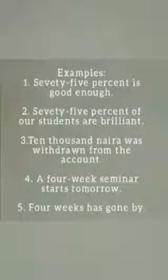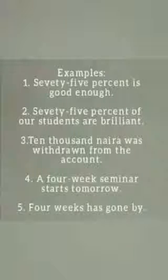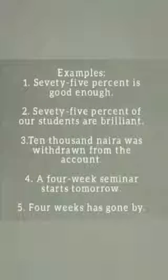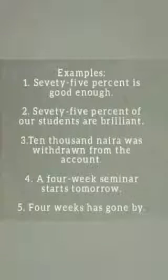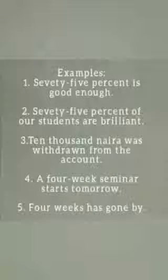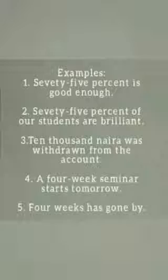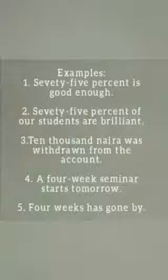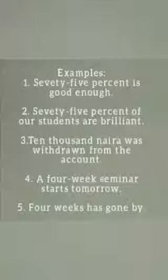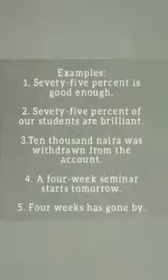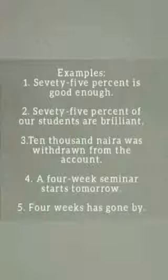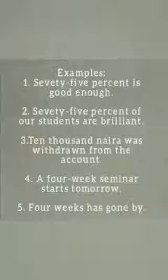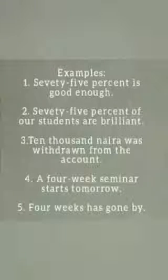For number one, 75% is a solid figure treated as a unit, so we use is. For number two, students appears before the verb, so we respect the plural and use are — 75% of our students are brilliant. For number three, 10,000 Naira as a unit of money — all the bulk of money together — was withdrawn, singular. A 4-week seminar: that A makes the whole thing singular, starts tomorrow. And 4 weeks has gone by — 4 weeks is a unit of time.